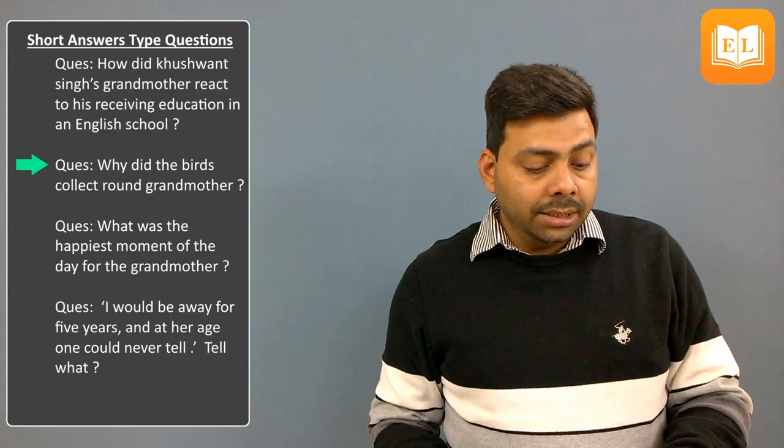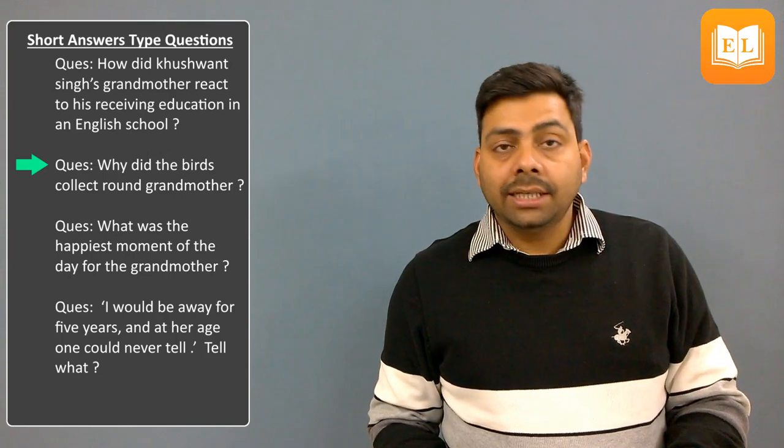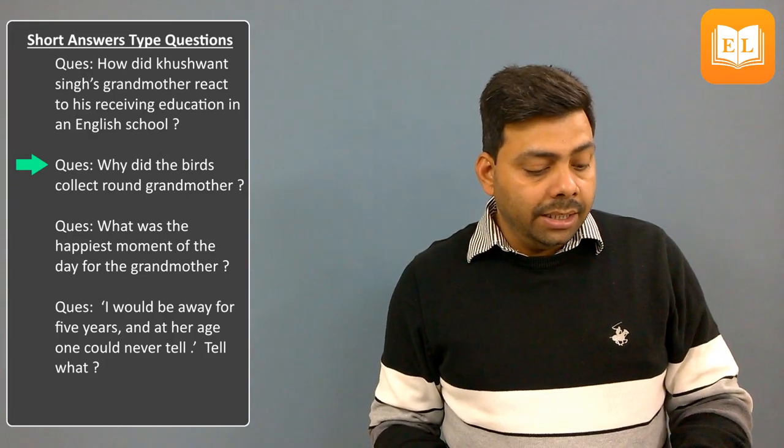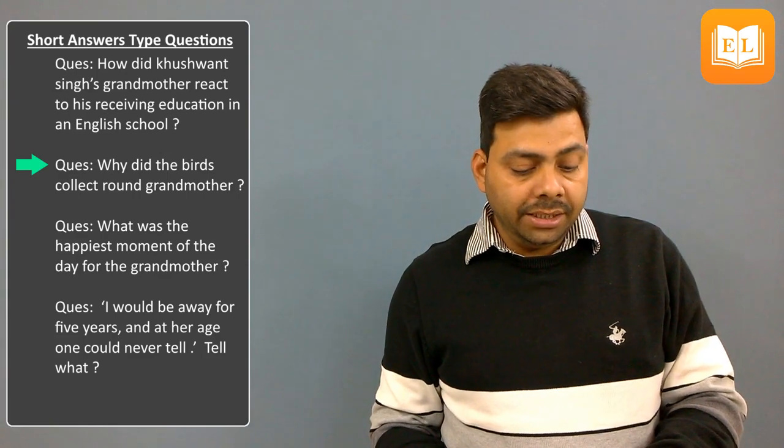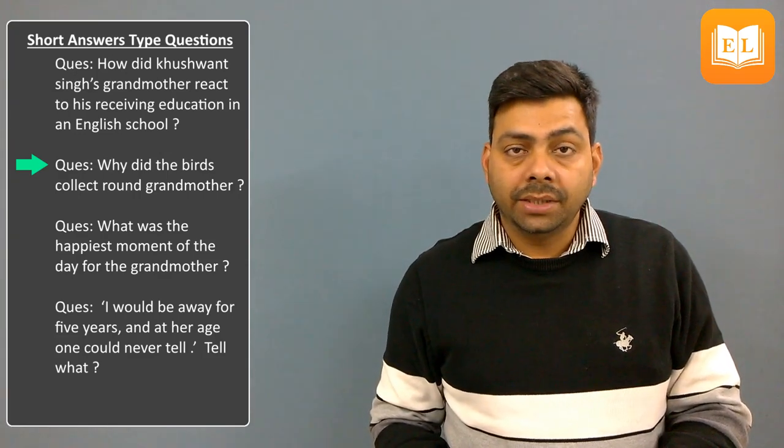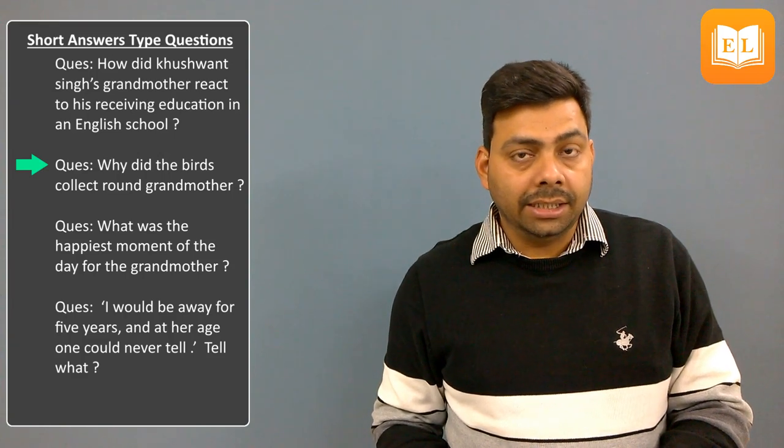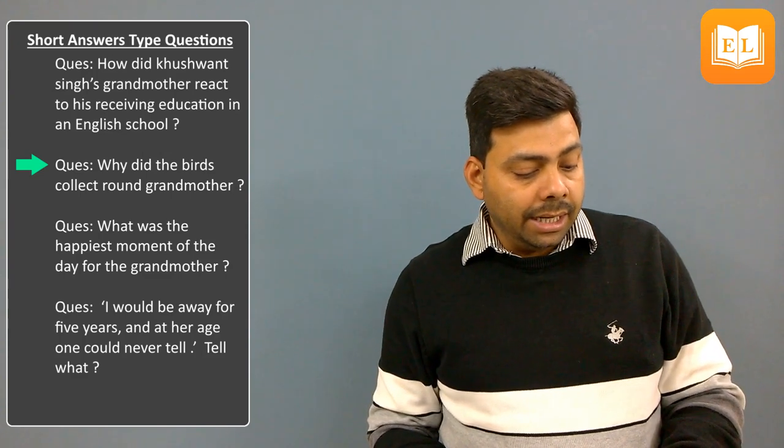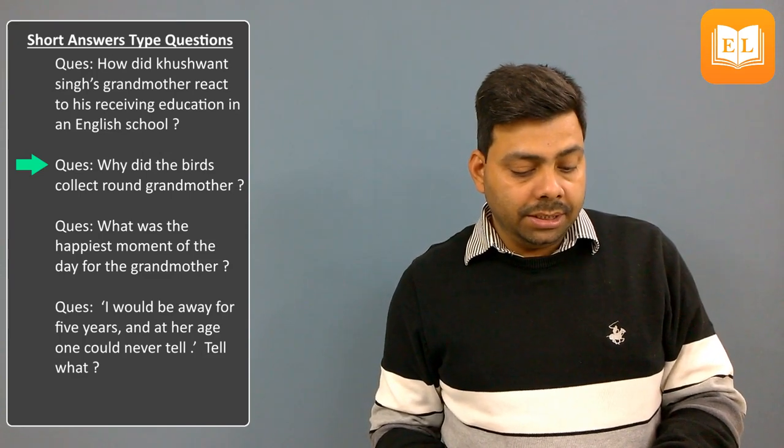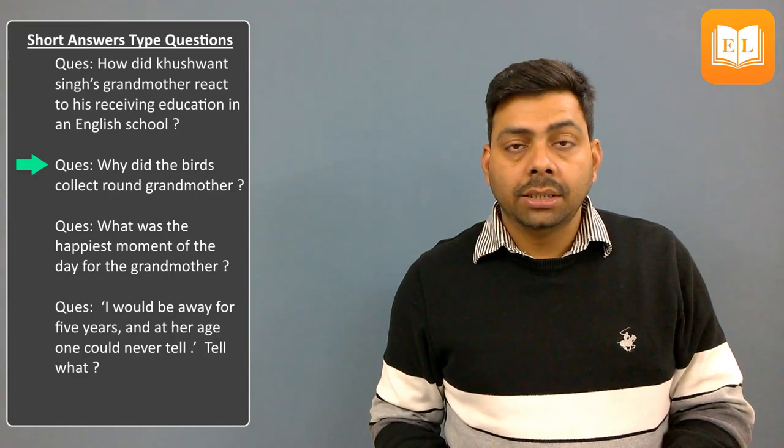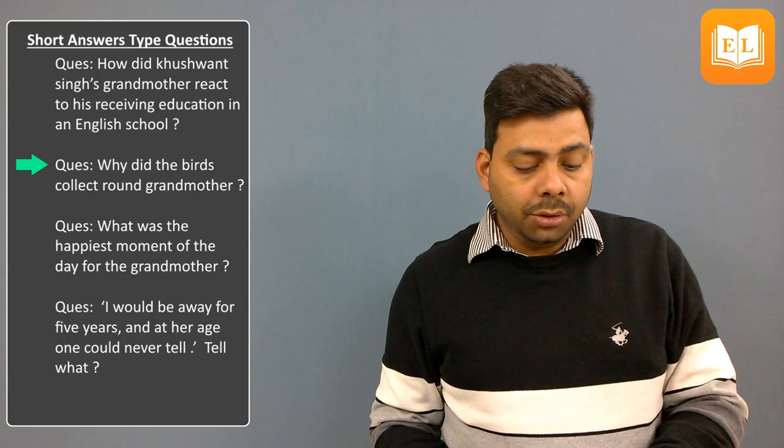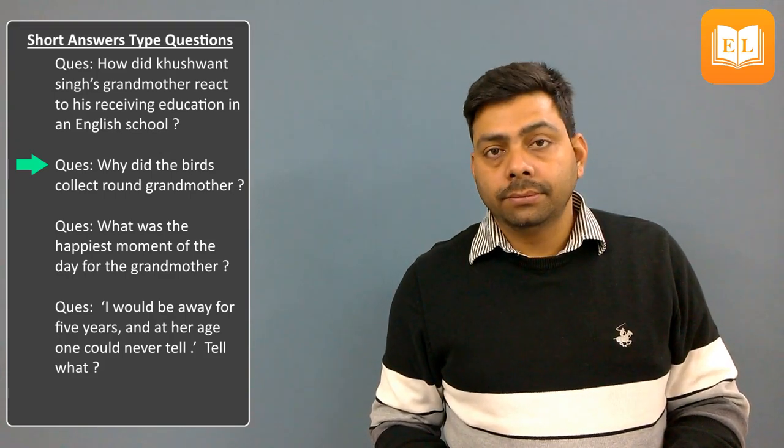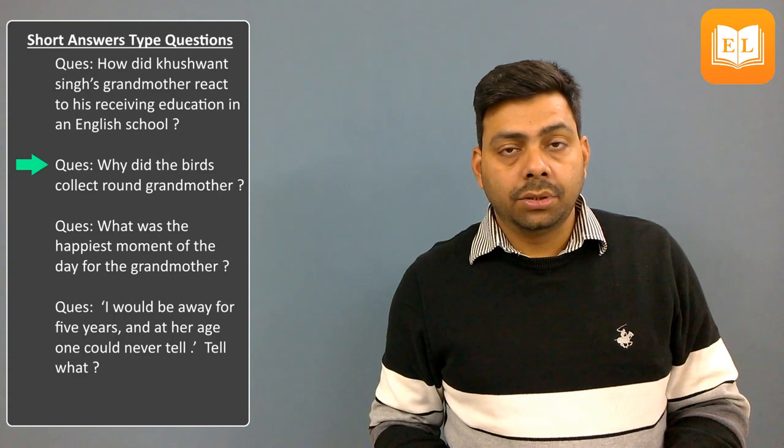Next question: Why did the birds collect round grandmother? Answer: In the city, grandmother had taken to feeding the sparrows. She broke the bread into little bits and threw the crumbs to the birds. Hundreds of birds collected round her to pick up the crumbs.